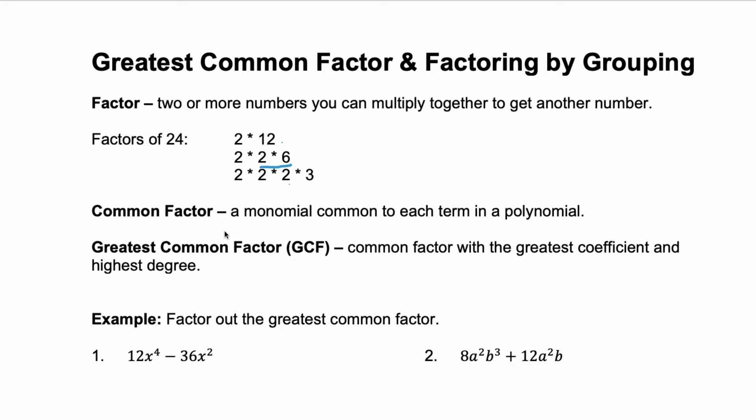A common factor would be any monomial common to each term in the polynomial, but we care more about this GCF, the Greatest Common Factor. This is the greatest coefficient, or number, and the highest degree, the largest number of variables, you can factor out. So it's what each term has in common, the most that they have in common.